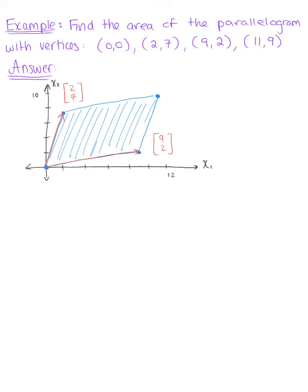So therefore our matrix A is defined by the 2 by 2 matrix [9, 2; 2, 7]. And we're ready to go.